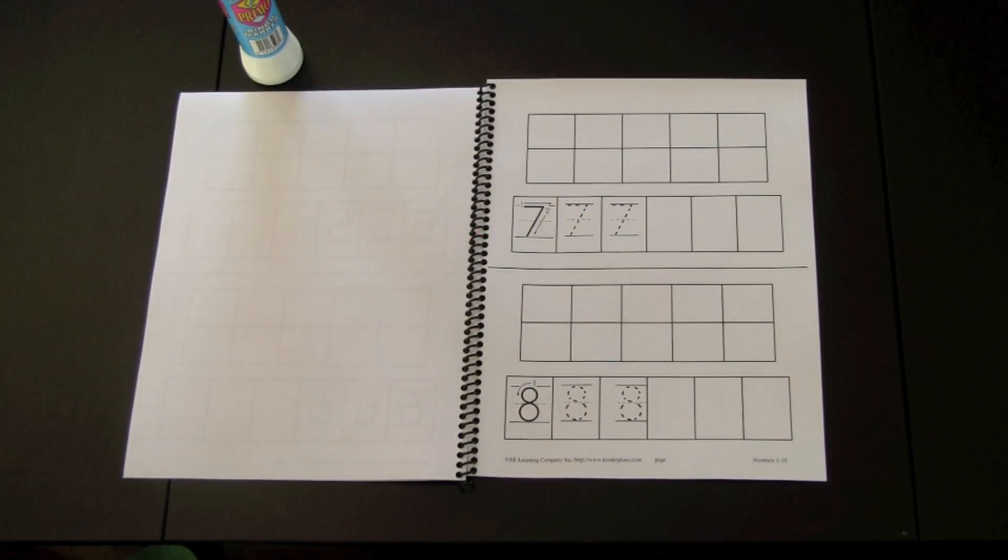After the children have practiced printing the number seven off the paper, which means they would practice it in the sand, in a salt tray, on each other's backs, or in pudding or in shaving cream, they would be able to transfer this to paper.